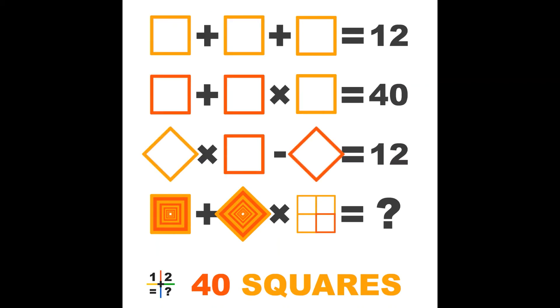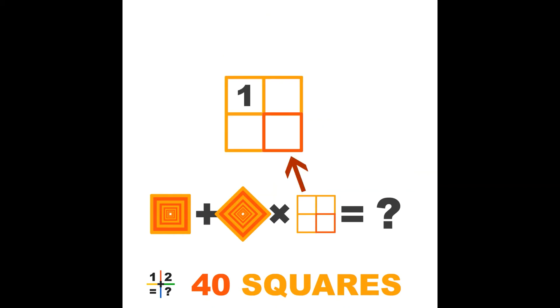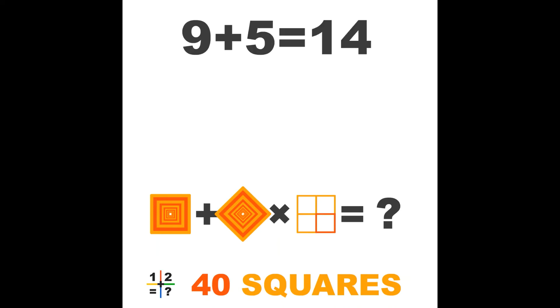So let's do the count. 9 squares in the first three lines: 1, 2, 3, 4, 5 squares in the last object of the last line. 9 plus 5 equals 14 squares. But we need 40 squares.